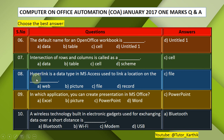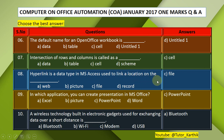Question 8: Hyperlink is a data type in MS Access used to link a location on the —. A. Web, B. Picture, C. File, D. Record. The answer is C — File.